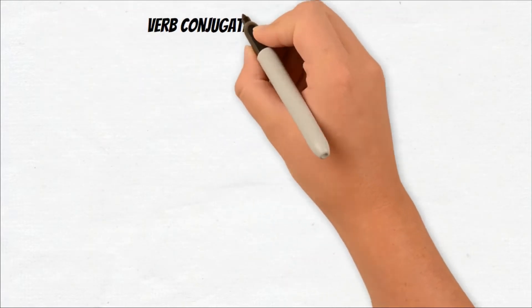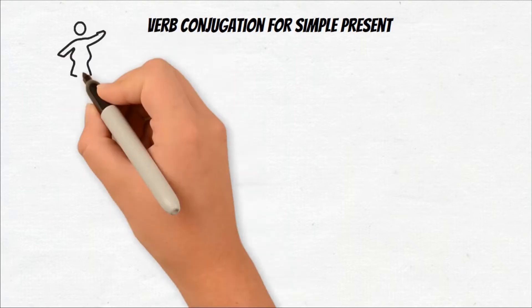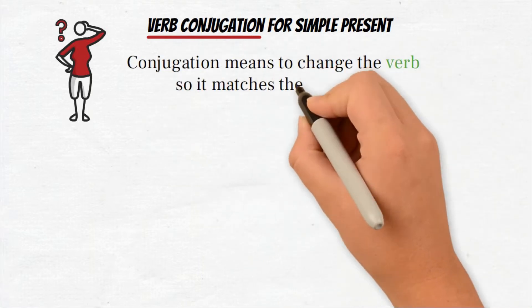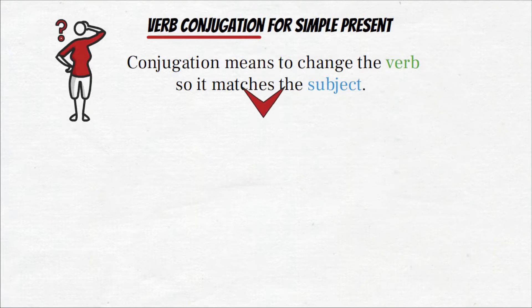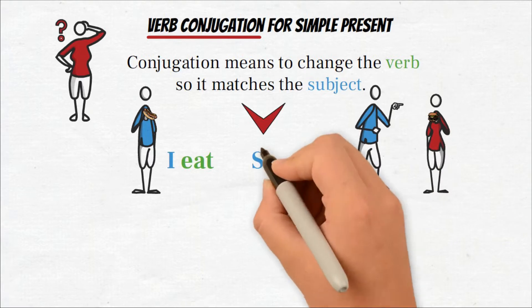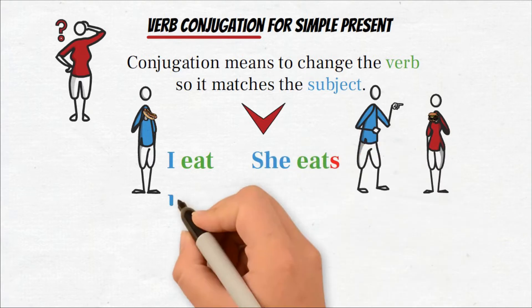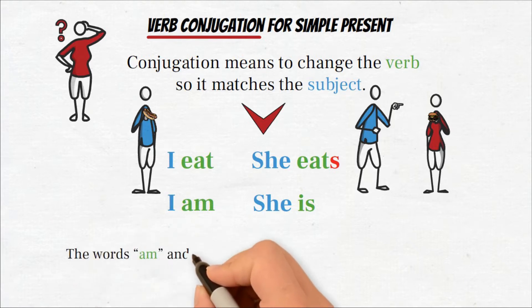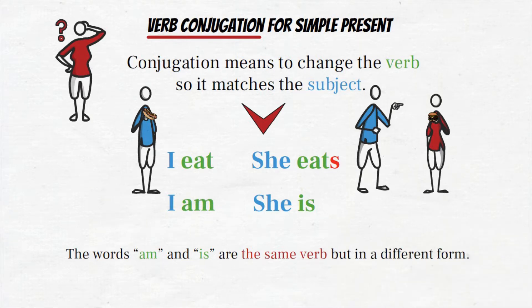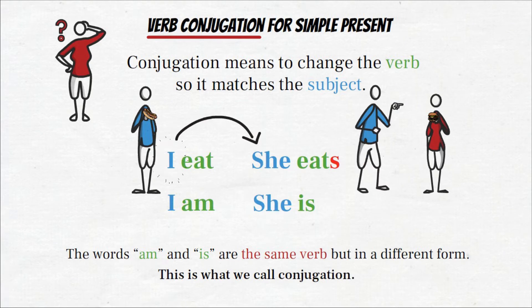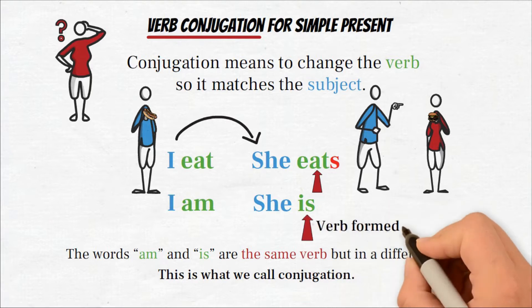First, we will have to learn the verb conjugation for simple present. What is a verb conjugation? Conjugation means to change the verb so it matches the subject. In present simple, it looks like this: I eat and she eats. I am and she is. The words am and is are the same verb but in a different form. This is what we call conjugation. Here, we change the subject from I to she, so we also had to conjugate the verb. In other words, to form the verb differently.